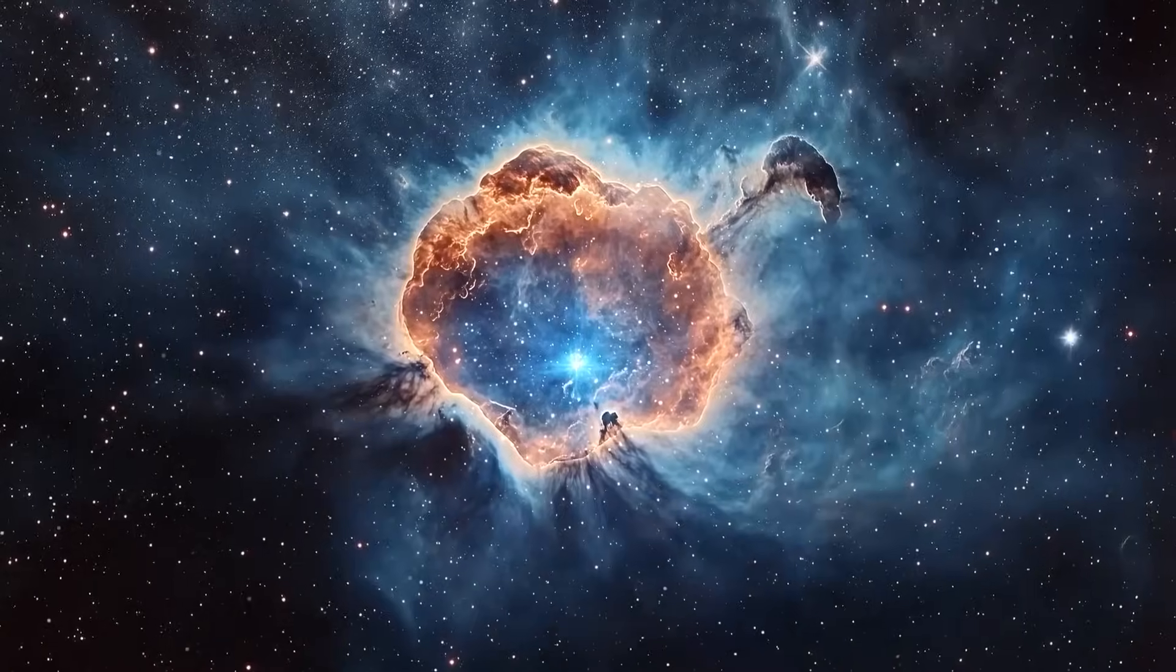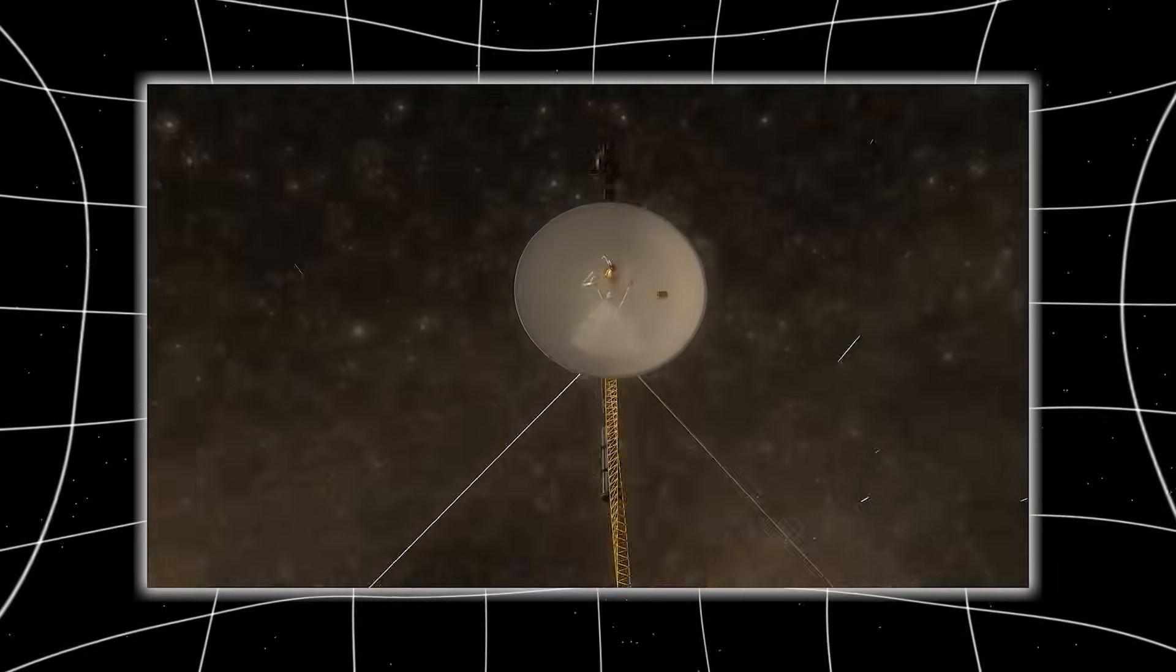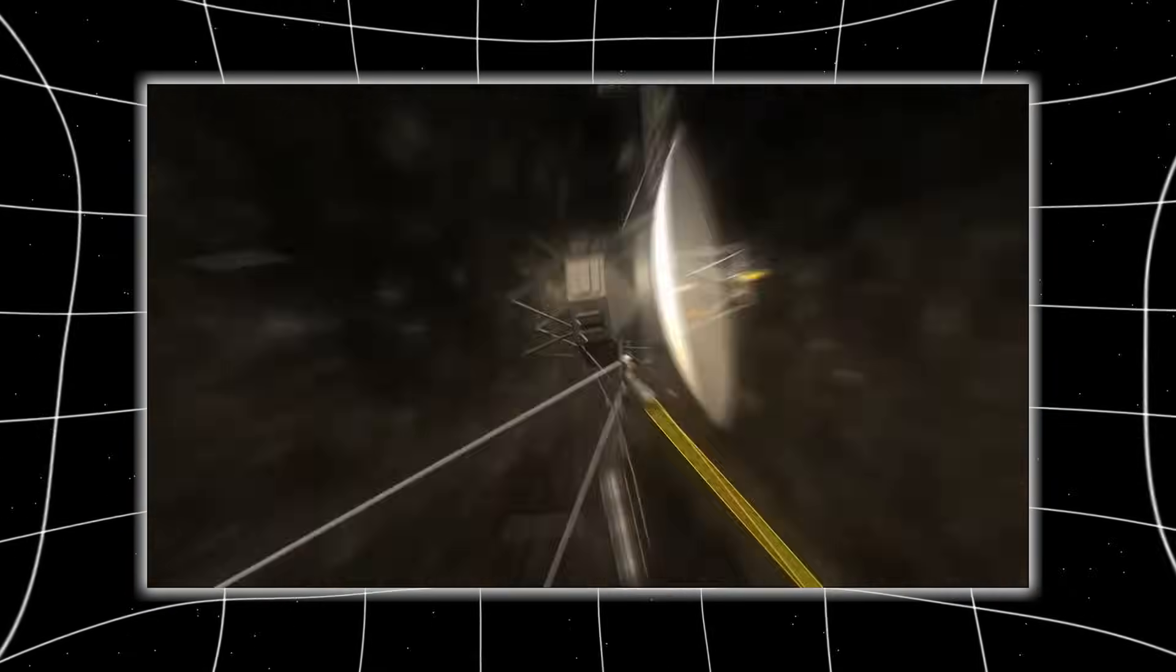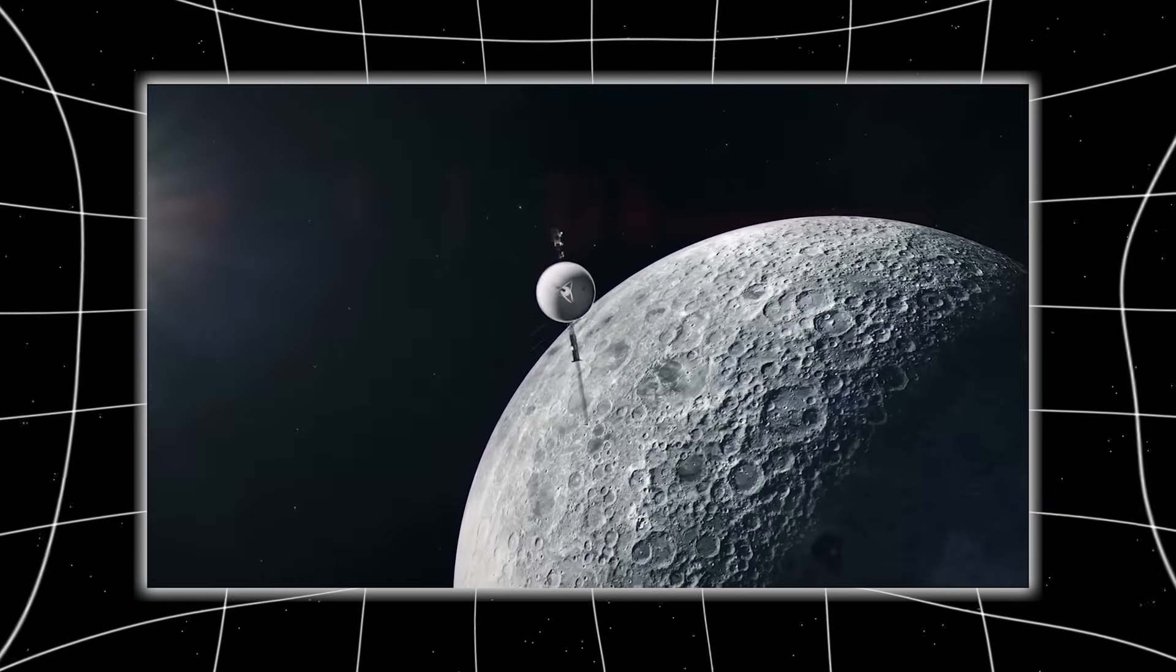But one internal memo, leaked by an anonymous whistleblower, offered a more chilling reason. Subject has requested immediate relocation to underground facility Site 7. Claims to have received the call from Signal Fragment C. What was Fragment C?